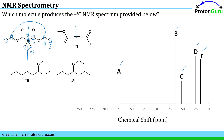Molecule 2 is symmetric as well. One signal for the methyl groups, a second signal for the carbonyl, and a third signal for the alkyne carbons. That's too few signals compared to what I actually see in my spectrum, so I can rule out possibility 2.